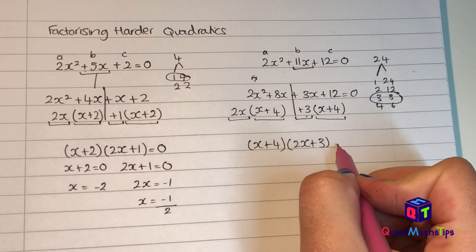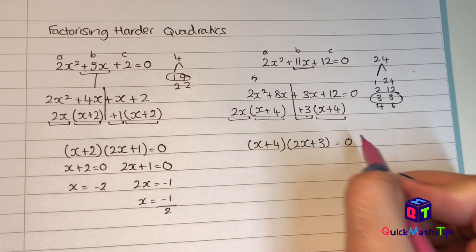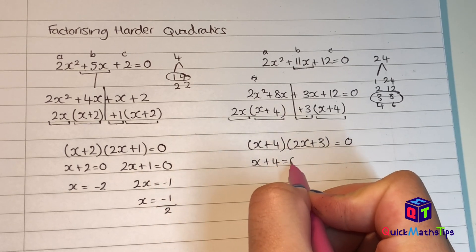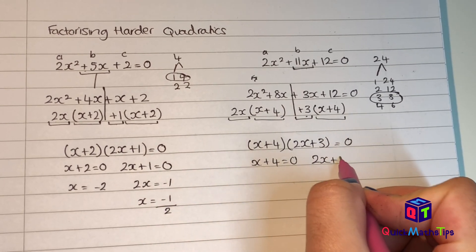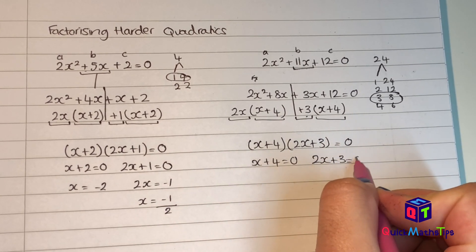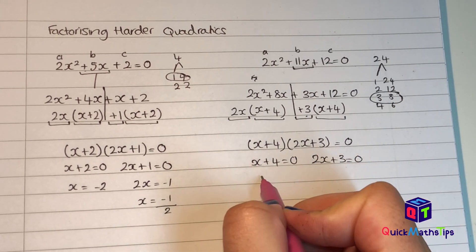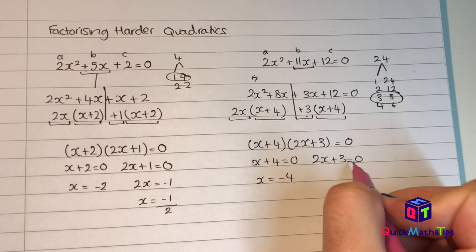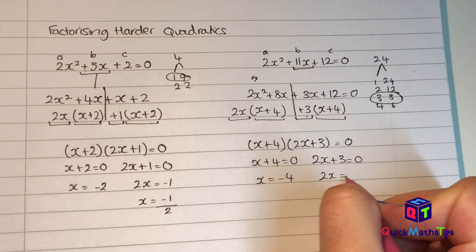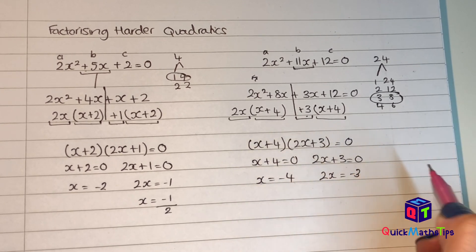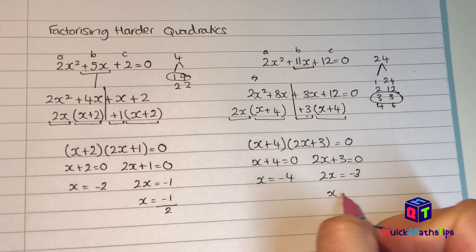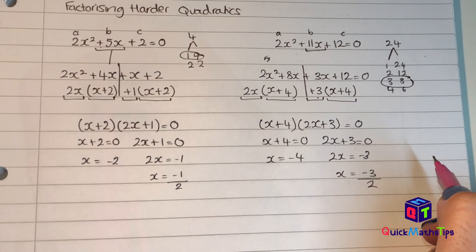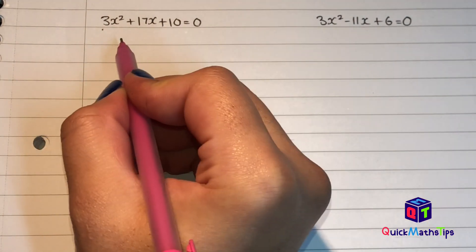Now if the question asks me to solve it, both brackets equal 0: x plus 4 equals 0 and 2x plus 3 equals 0. Subtracting 4 gives x equals negative 4. Subtracting 3 gives 2x equals negative 3, and dividing by 2 gives x equals negative three over two.